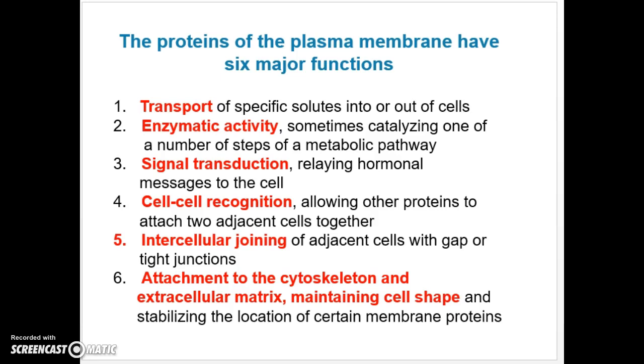These are the six major functions of proteins in the plasma membrane. We either can have transport of specific solutes into or out of a cell. We can have proteins actually involved in enzymatic activity right in the cell membrane. Sometimes they can be catalyzing one or a number of steps in a metabolic pathway. I mentioned in Chapter 6 lecture how, for example, in photosynthesis and in cellular respiration, some of the enzymatic processes are actually occurring in the membranes of the mitochondria and chloroplasts.